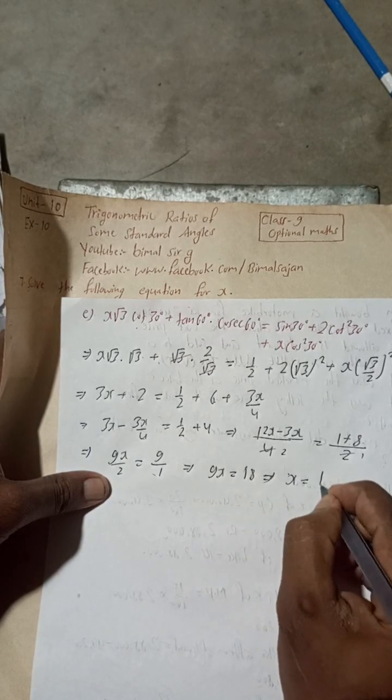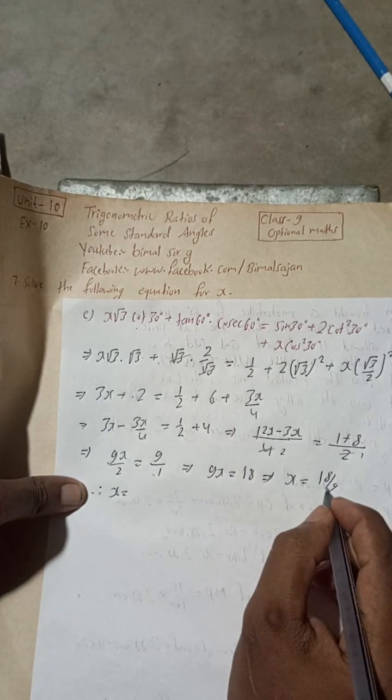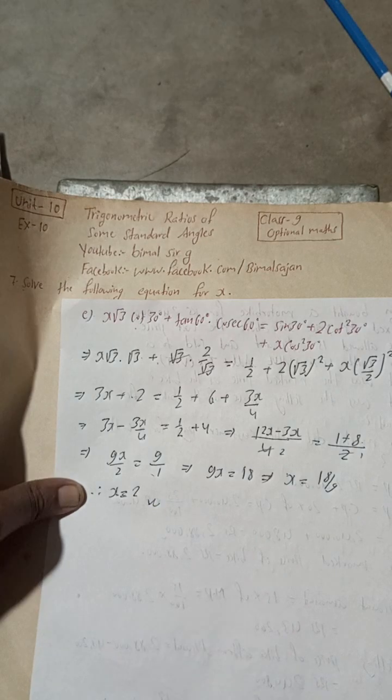Now here x is equal to 18 divided by 9. Therefore x is equal to 18 divided by 9 is 2. So this is the required solution of this 7e number.